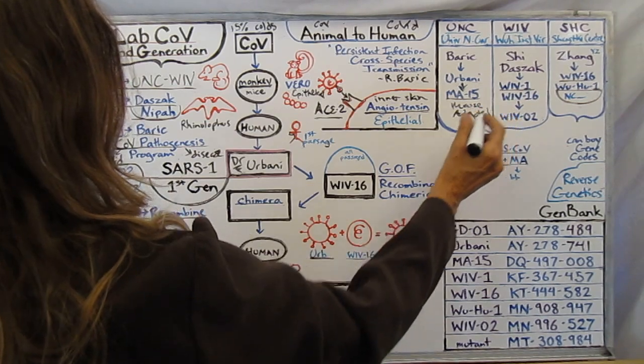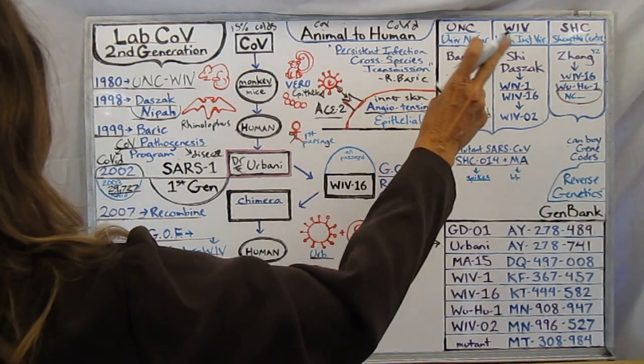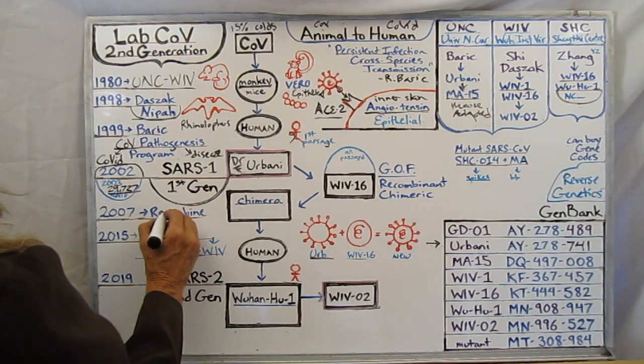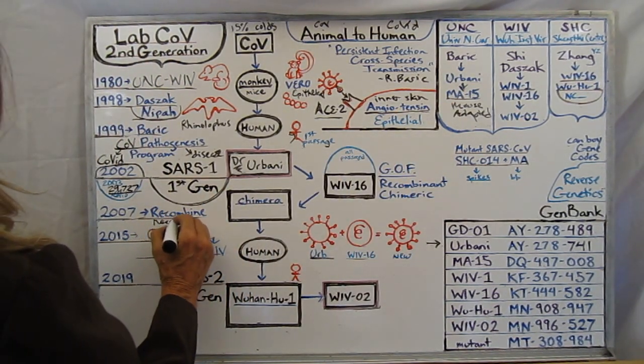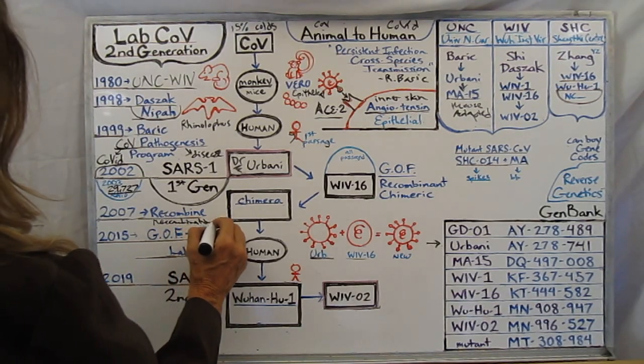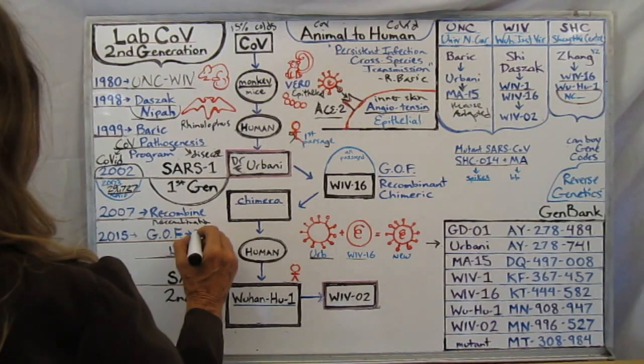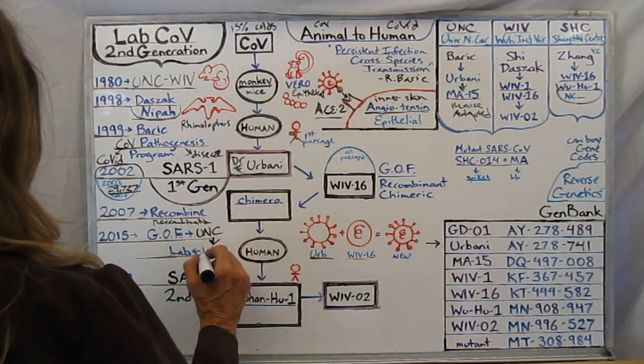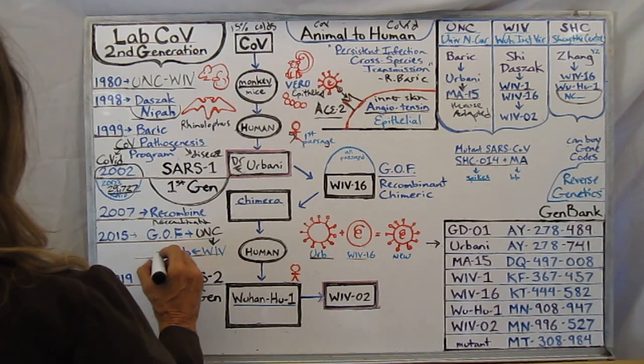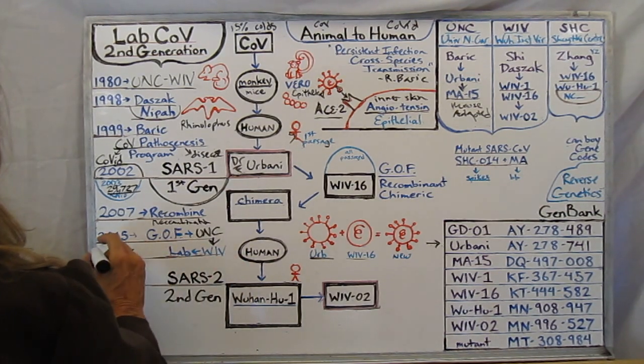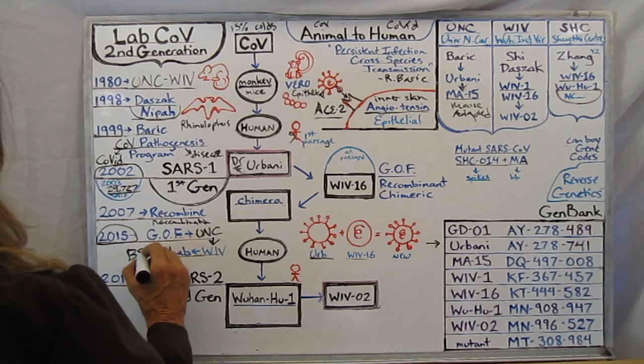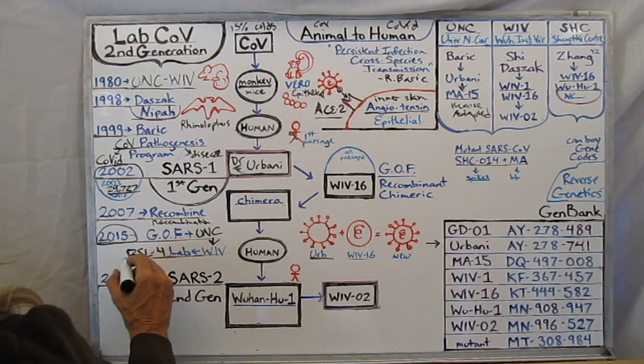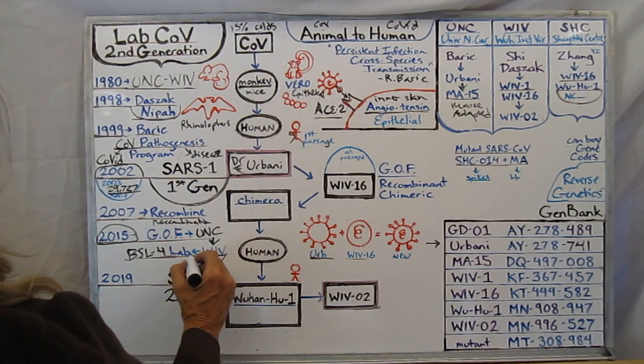He loved playing with this and then you got Shi working with him, they're recombining. It's called recombination and recombination is gain of function. And this is what the University of North Carolina was doing which then passed off to the Wuhan Institute of Virology that then built in 2015 a BSL-4 lab which means biosafety level number four, the highest level, which they finally built for the first time in China in Wuhan.